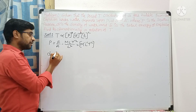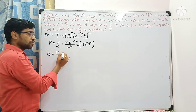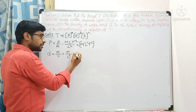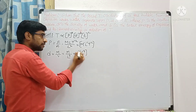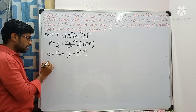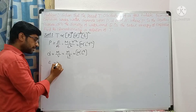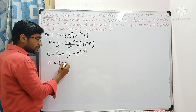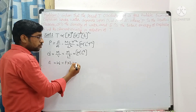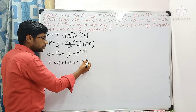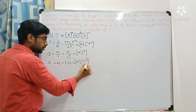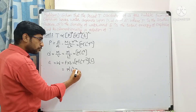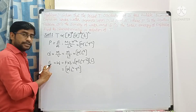Next, density has dimensional formula M to the power 1, L to the power minus 3. Energy equals work, so work's dimensional formula applies to energy. Work equals force into displacement: force is M L T to the power minus 2, multiplied by displacement L, giving M to the power 1, L to the power 2, T to the power minus 2 as the dimensional formula for energy.